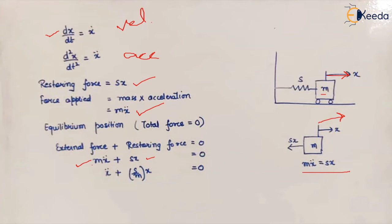If we take m as common, we can write the equation in this form, and comparing it with the generalized equation of SHM, we find that the natural frequency of the system is given as the square root of S upon m.